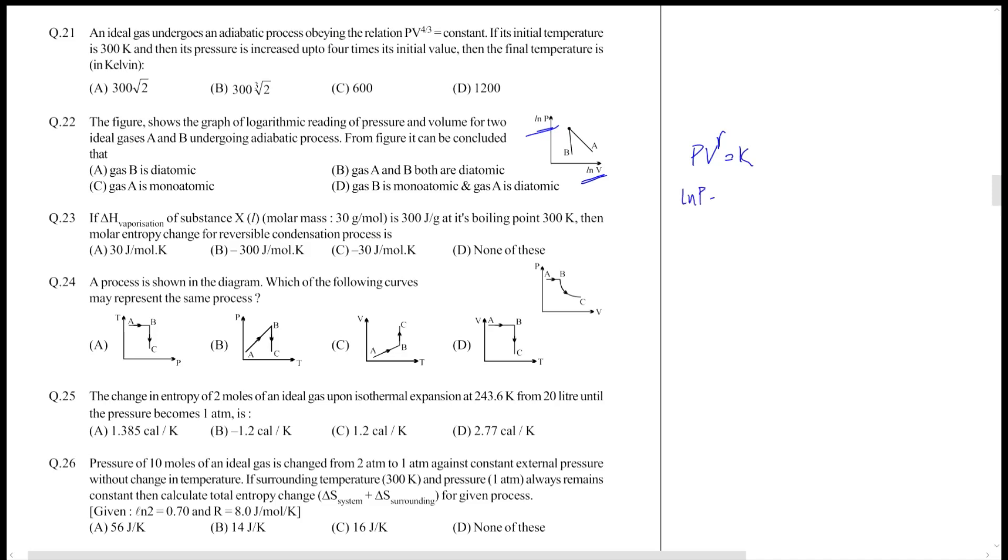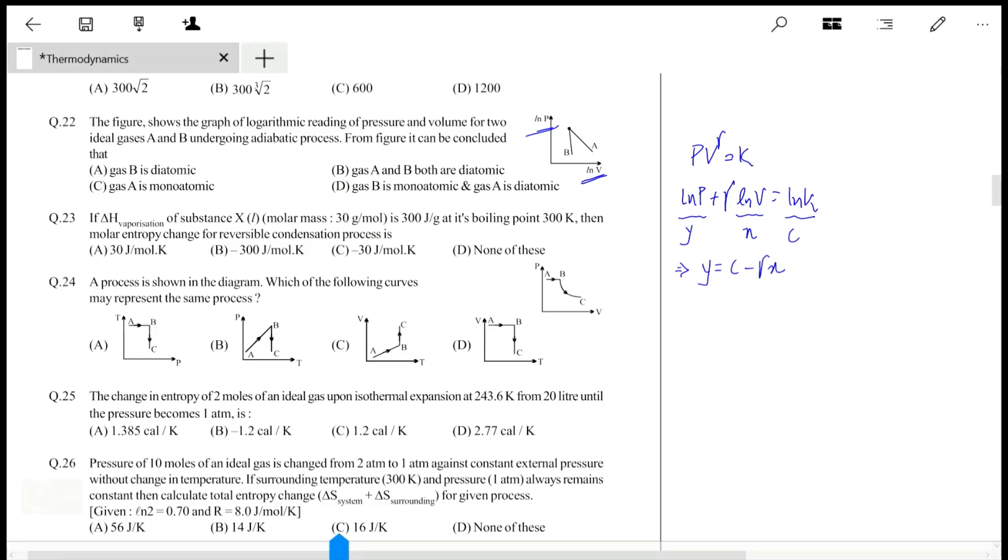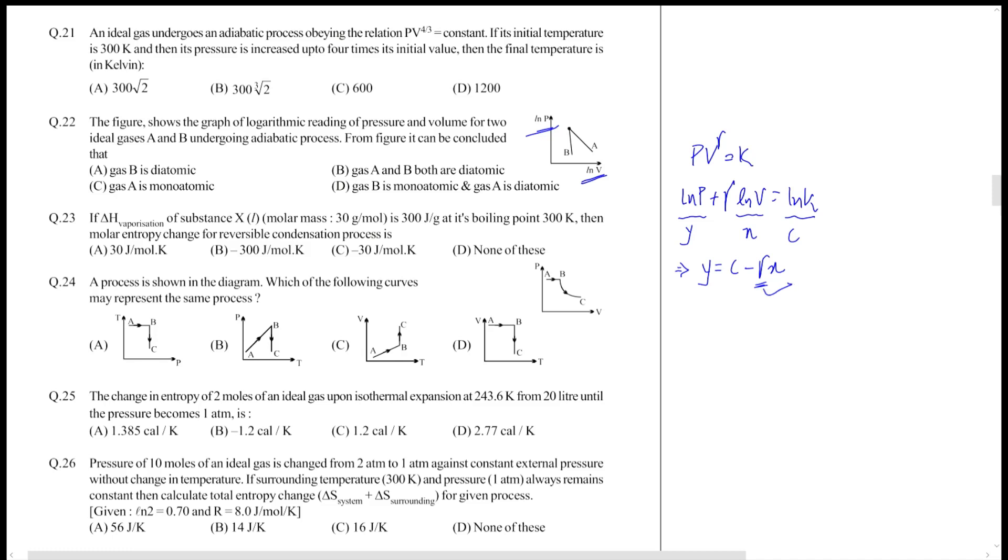So ln P is on the y-axis and ln V is on the x-axis. The equation can be written as y equals C minus gamma X, where C is a constant. So gamma is the slope in this question.